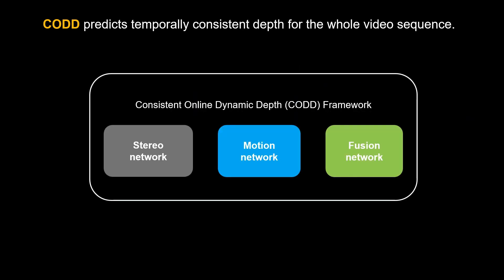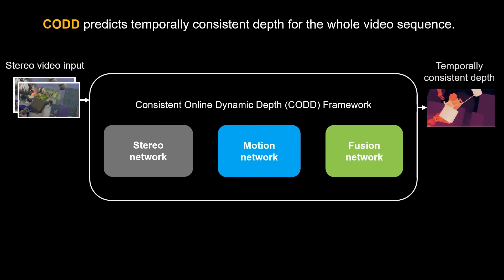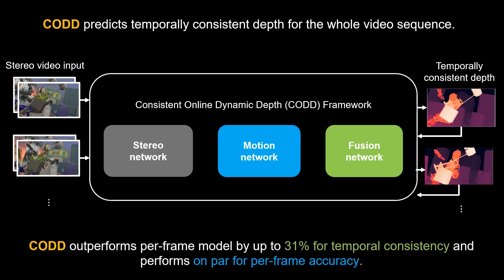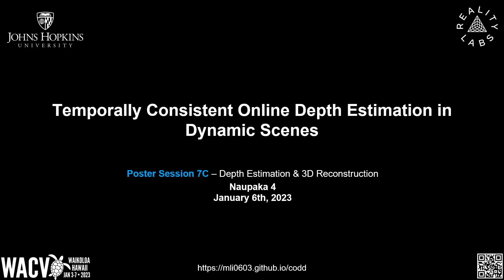COD runs for the entire video sequence. After generating consistent depth for the first frame, the result is cached for the next frame. This process iterates until the end of the video. COD outperforms the per-frame model by up to 31% for temporal consistency, and performs on par in terms of depth accuracy. For more details, please visit poster session 7C and check out our project page.